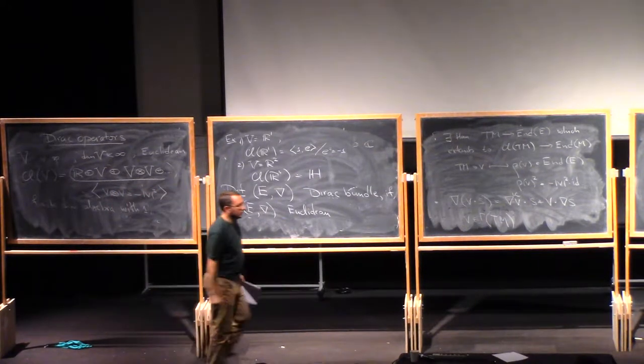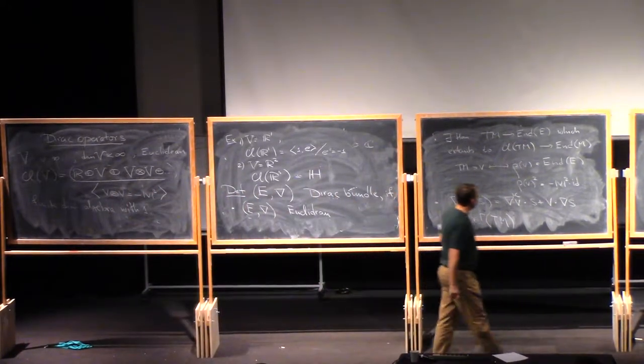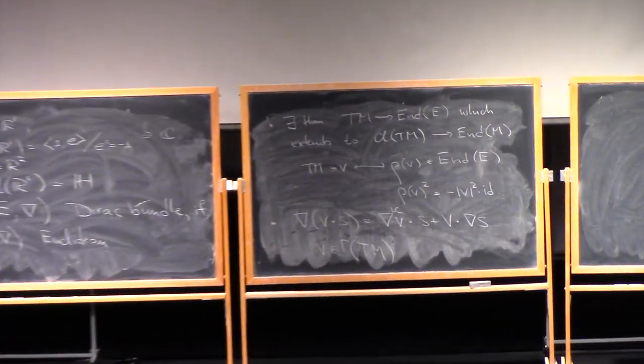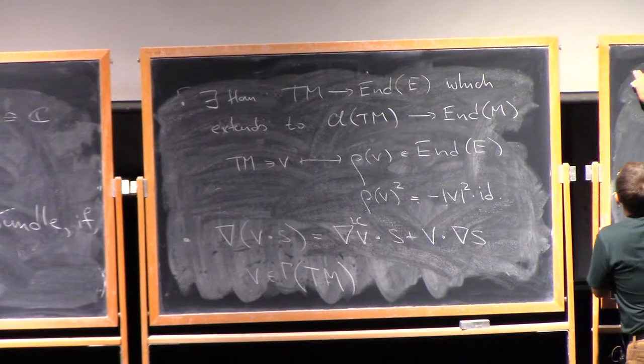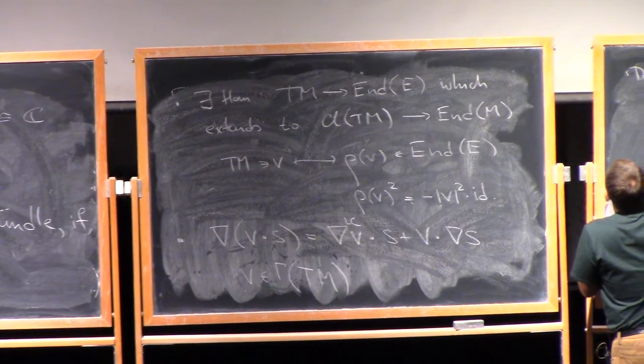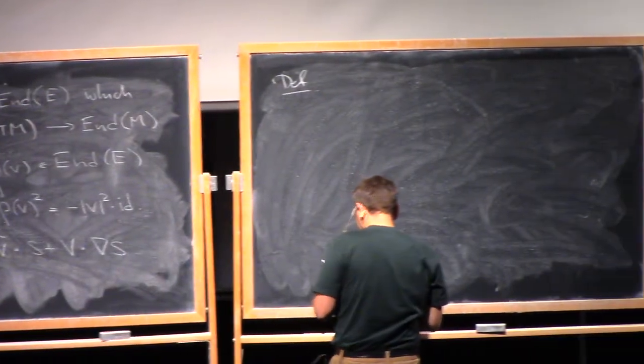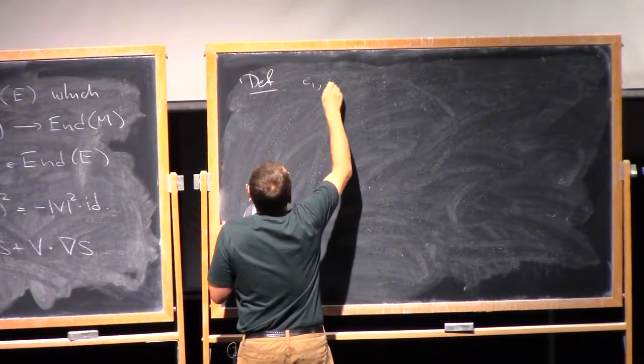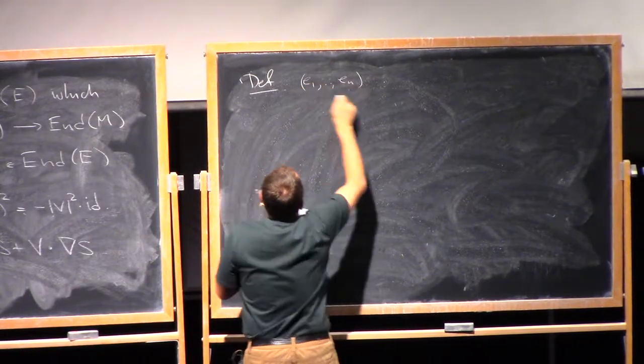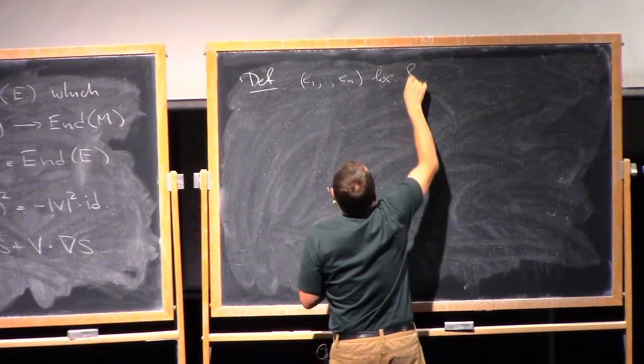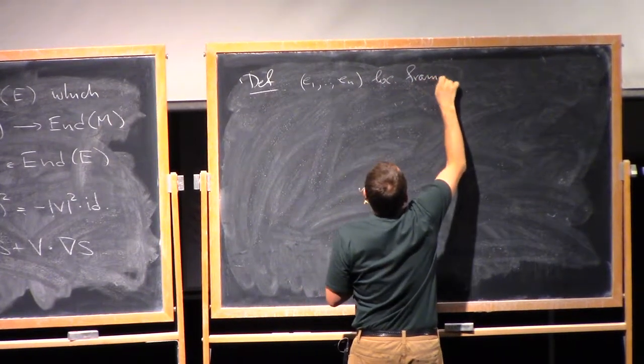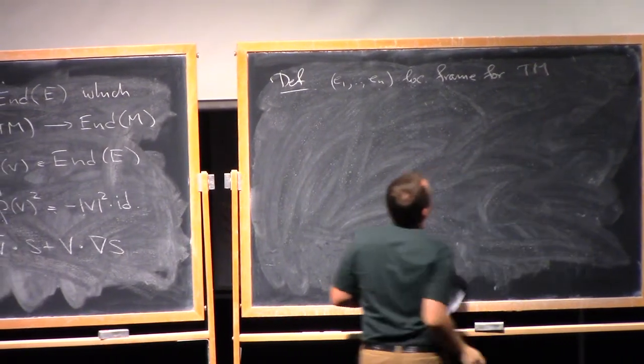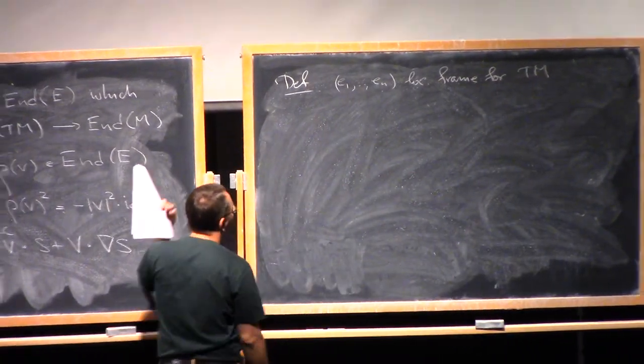Okay. What is it good for? This is good for the following thing. So if I have a structure of a Dirac module, I can define the Dirac operator. So here is the definition. Now, I choose a local frame, U1, UN, with the local frame for TM, or say, some open subset U